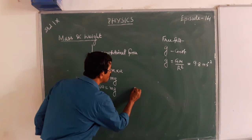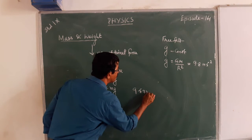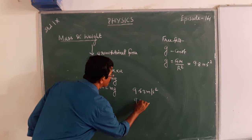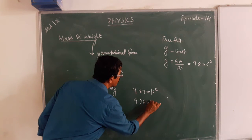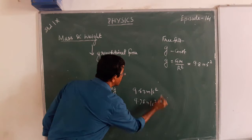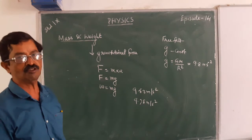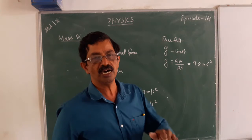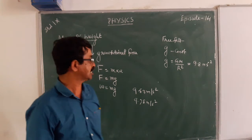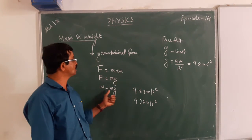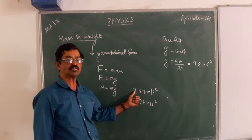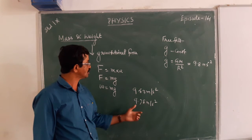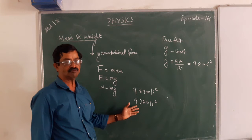At the poles, the value of g is 9.83 m/s², but at the equator it is 9.78 m/s² — a slightly smaller value. Hence, weight changes from poles to equator. For a body, its weight is more at the poles and a little less at the equator, because of the change in the value of g.